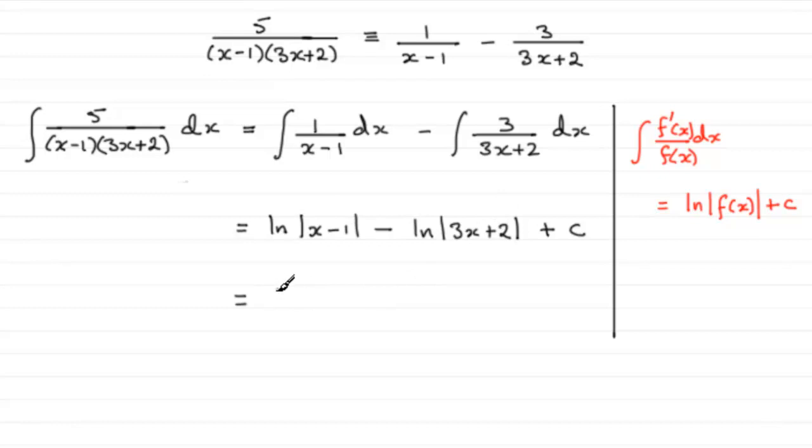So in other words, we get the natural log of the mod of (x minus 1) divided by (3x plus 2). And you could put that in a mod there and say plus c.